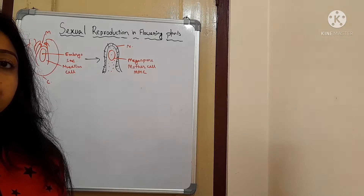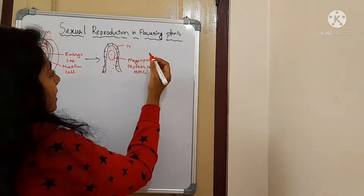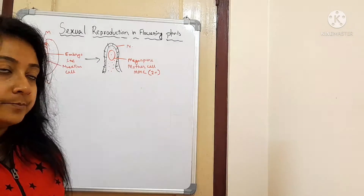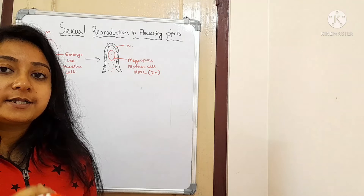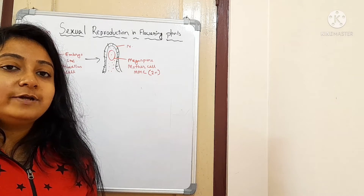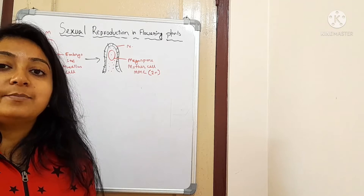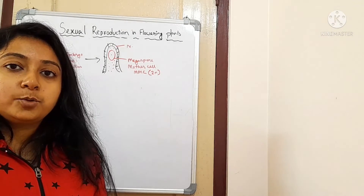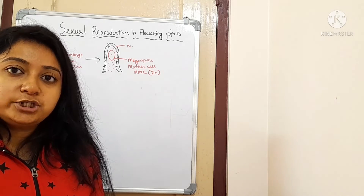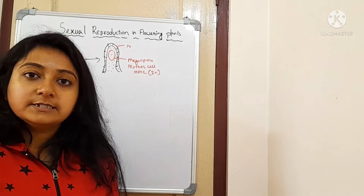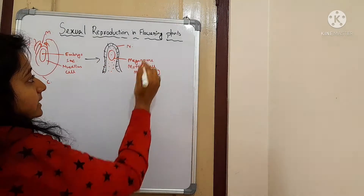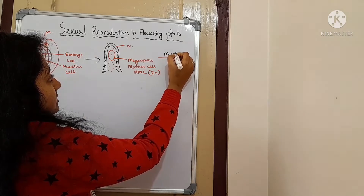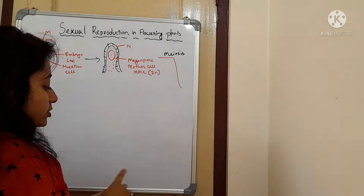From this megaspore mother cell, division will take place and that will lead to the formation of megaspores. The megaspore mother cell has a 2n number of chromosomes, so it obviously needs to undergo meiosis cell division in order to produce haploid gametes. We know that in the gamete, unless there is a haploid number of chromosomes — half the number compared to the parental cell — fertilization is not possible. So the MMC will undergo meiosis cell division, which will lead to the formation of four cells.